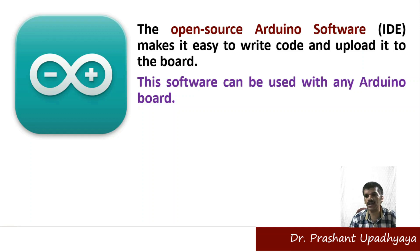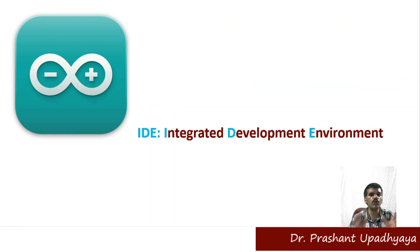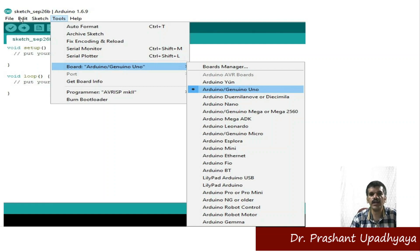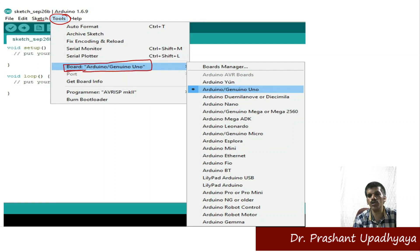IDE stands for Integrated Development Environment. This is the structure you will see after you have installed the program. We have a File option, an Edit option, a Sketch option, and a Tools option. Under Tools, you will find the board selection option.